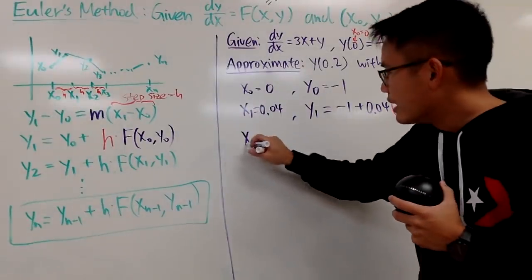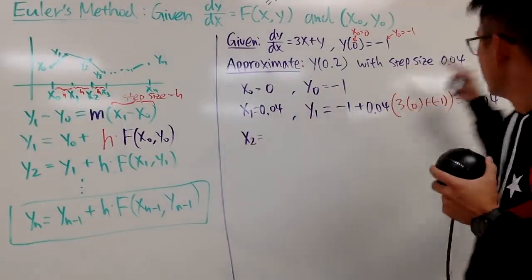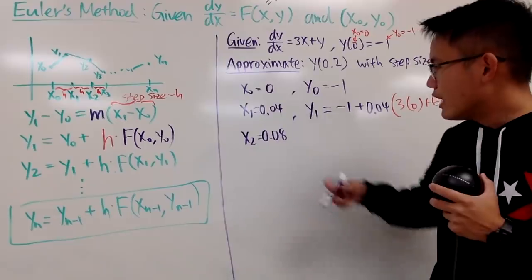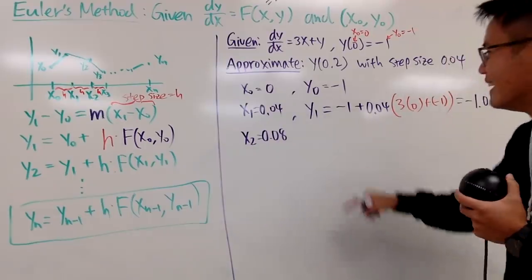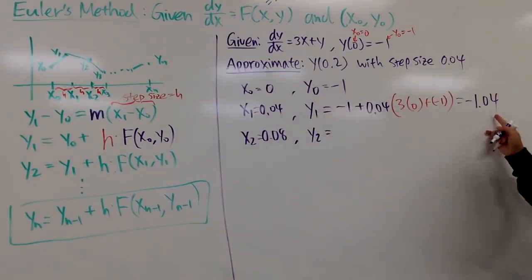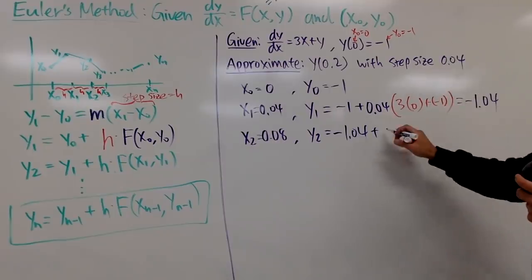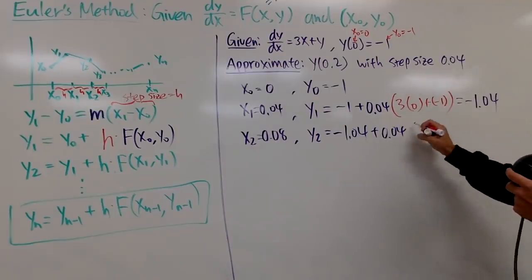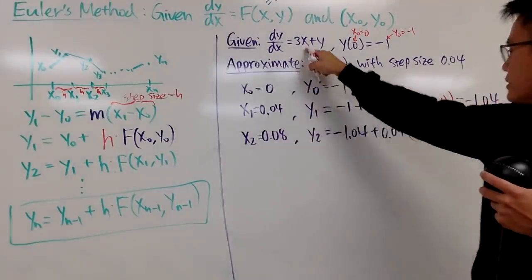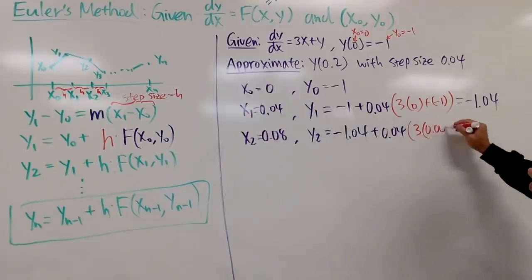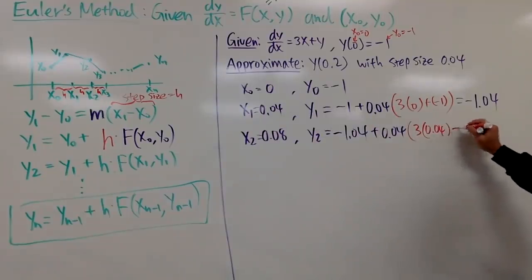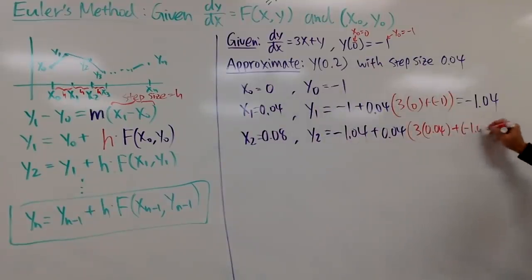Now continue. x2 is just x1 plus the same step size again — consistency is the key, don't ever take a different step size. y2: look at your previous y value, which is negative 1.04, and add it with 0.04 times — plugging in x1 = 0.04 and y1 = negative 1.04: 3 times 0.04 plus negative 1.04. So y2 is approximately negative 1.0768.